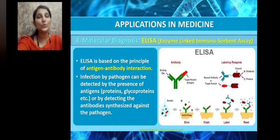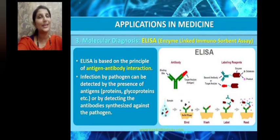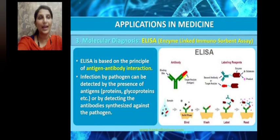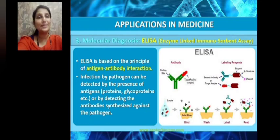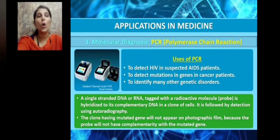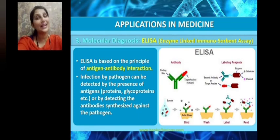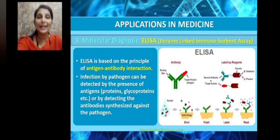Next is the use of the ELISA test to diagnose a disease at its earliest stage. ELISA stands for Enzyme-Linked Immunosorbent Assay. It is based on the principle of antigen-antibody interaction. The antibody is a Y-shaped molecule that attaches to a specific antigen. Infection by a pathogen can be detected by the presence of antigens — proteins, glycoproteins — or by detecting the antibodies synthesized against the pathogen, since our body produces antibodies when a pathogen enters.